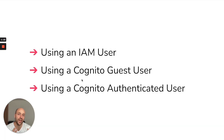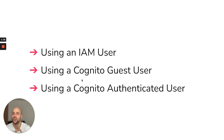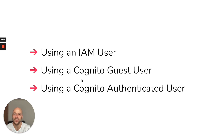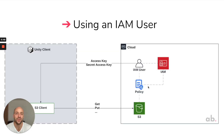There are many ways to access AWS resources from Unity, and in this video I will show you three of them: the first one using an IAM user, the second one using a Cognito guest user, and the third one using a Cognito authenticated user. In this video I will use the AWS SDK for .NET — you can find in the description how to install it in your Unity project.